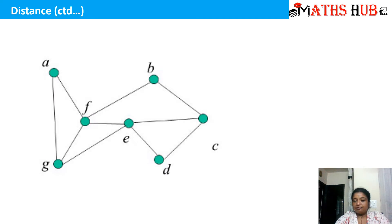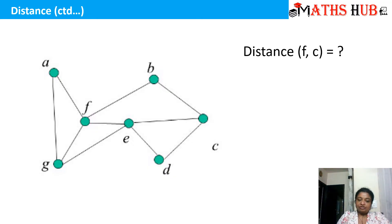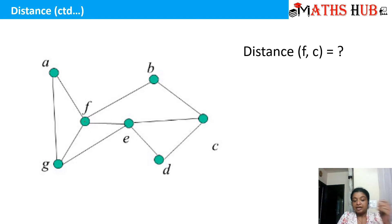Let's look at another example. We have a graph and we need to calculate the distance between F and C. You can see this is an undirected graph — this is node F and this is node C. We have various paths: one is F to B then B to C; another is F to E then E to C; another is F to G, G to E, E to D, D to C, and many others. But the shortest path has length 2.